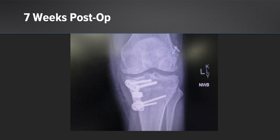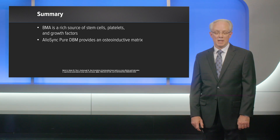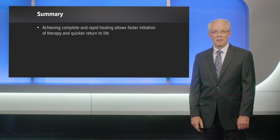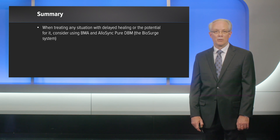Seven weeks post-operatively, you can see on this radiograph she has complete healing of the osteotomy. She started on full weight bearing and progressive strengthening, and at three months she still had maintenance of her correction and was well on her way to returning to full activities. In this case, combining bone marrow aspirate concentrate — which provides a rich supply of stem cells, platelets, and growth factors — with AlloSure and its osteoinductive matrix creates a regenerative matrix for the patient, achieving complete and rapid healing, faster initiation of therapy, and quicker return to life. Keep in mind when treating any situation with delayed healing or the potential for it to consider using bone marrow aspirate concentrate and AlloSure in your patient.